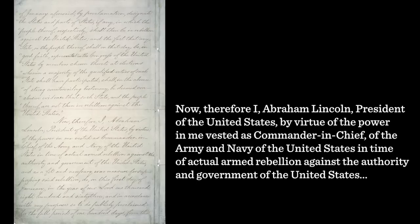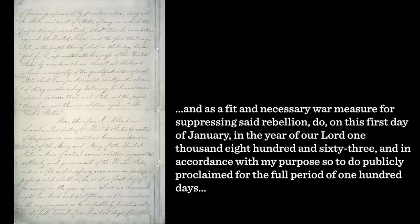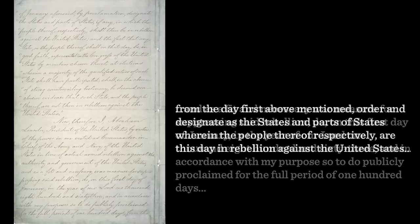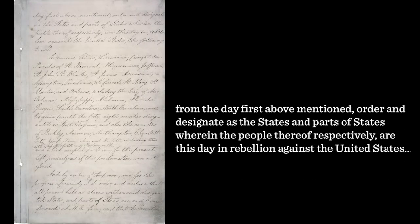People forget how much Congress contributed to this policy. In the paragraph that Lincoln quotes from the September Proclamation, he describes the conditions for which areas of the Confederacy would be declared in rebellion and subject to the policy of full emancipation. He writes: 'Now therefore, I, Abraham Lincoln, President of the United States, by virtue of the power in me vested as Commander-in-Chief of the Army and Navy of the United States, in time of actual armed rebellion against the authority and government of the United States, and as a fit and necessary war measure for suppressing said rebellion, do on the first day of January in the year of our Lord 1863, order and designate as the states and parts of states wherein the people thereof respectively are this day in rebellion against the United States.'